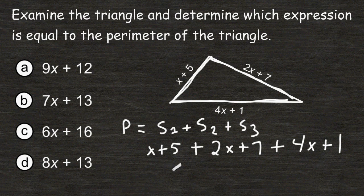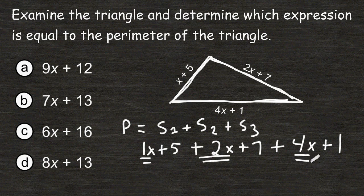Now we have a long expression here that we are going to simplify by combining like terms. We have 1x right here, 2x right here, and 4x right here. 1x plus 2x plus 4x is a total of 7x.